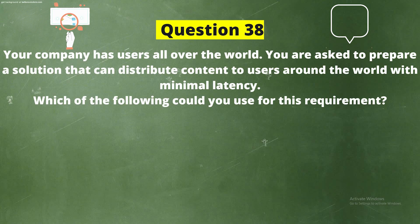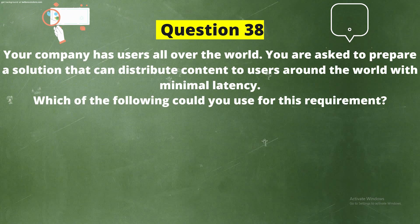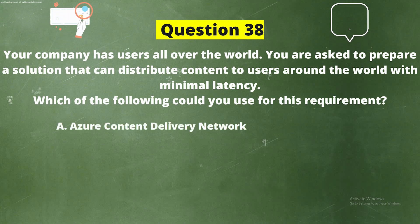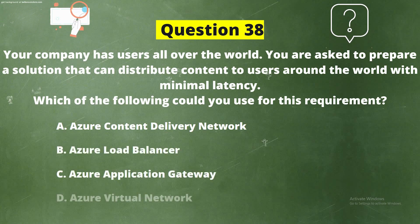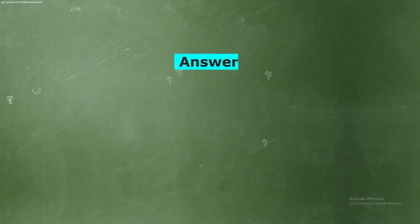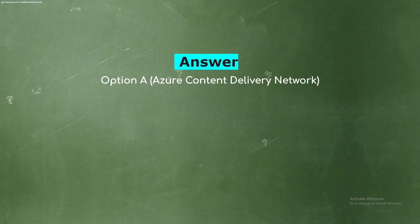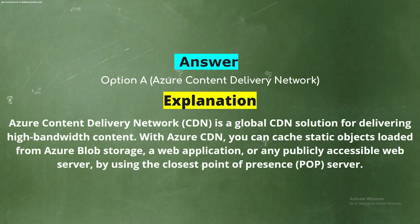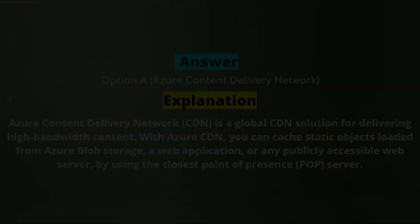Question 38: Your company has users all over the world. You are asked to prepare a solution that can distribute content to users around the world with minimal latency. Which of the following could you use? Options: Option A, Azure Content Delivery Network; Option B, Azure Load Balancer; Option C, Azure Application Gateway; Option D, Azure Virtual Network. The correct answer is Option A, Azure Content Delivery Network. Explanation: Azure CDN is a global solution for delivering high-bandwidth content. With Azure CDN you can cache static objects loaded from Azure Blob Storage, a web application, or any publicly accessible web server by using the closest point of presence server.